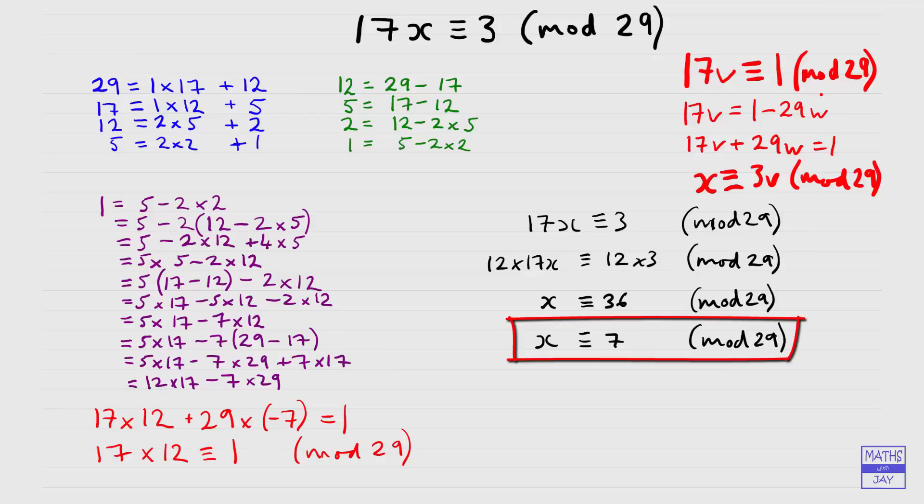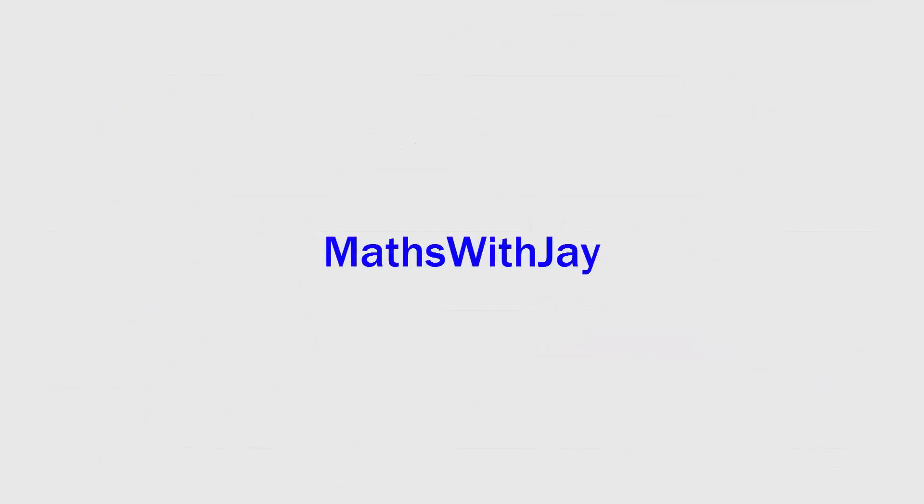And of course we could check our answer, we should find that when we multiply 17 by 7 that we end up getting something that's congruent to 3. So 17 times 7 is 119, and 119, well that's 4 times 29 which is 116 plus 3, so that is congruent to 3. So that's all good. So our check has shown that our answer of x is congruent to 7 is correct.